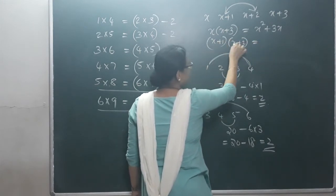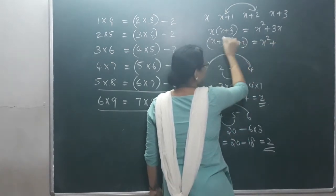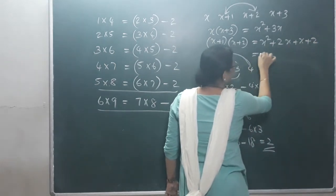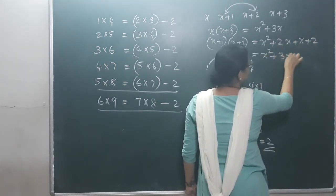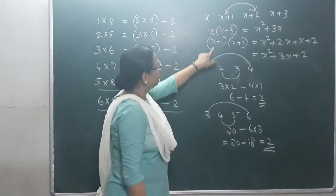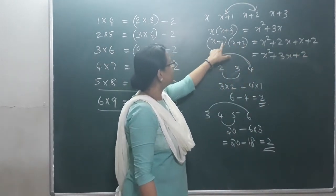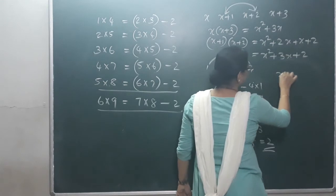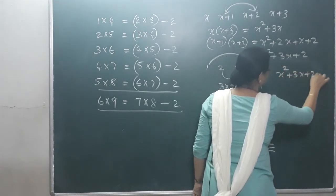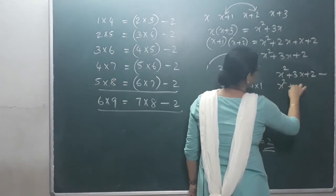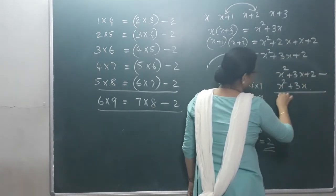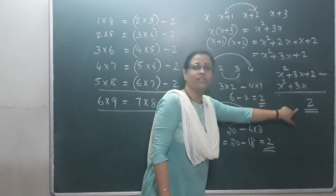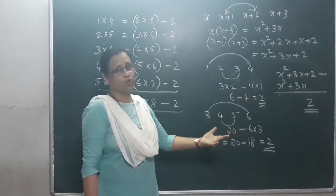That gives x squared plus 3x. The two middle terms are x plus 1 and x plus 2. Their product is x into x is x squared, plus 2x, plus 1x, plus 2 — that is x squared plus 3x plus 2. So the difference is x squared plus 3x plus 2 minus x squared plus 3x. Cut them — the answer is 2.